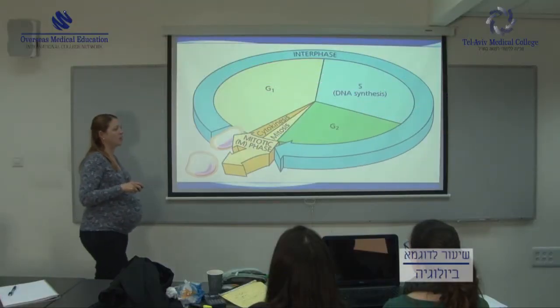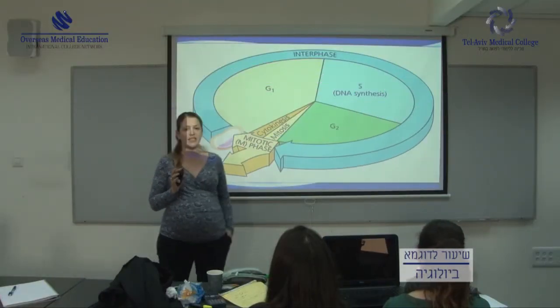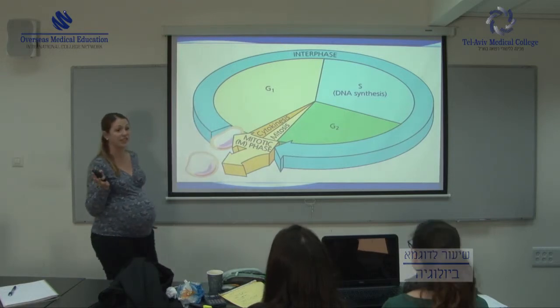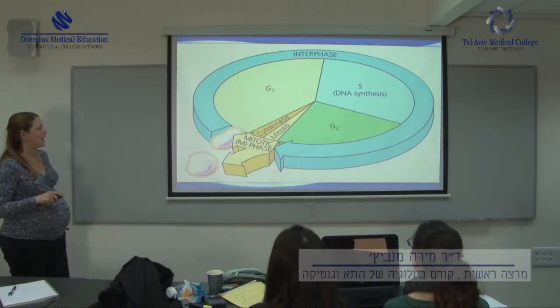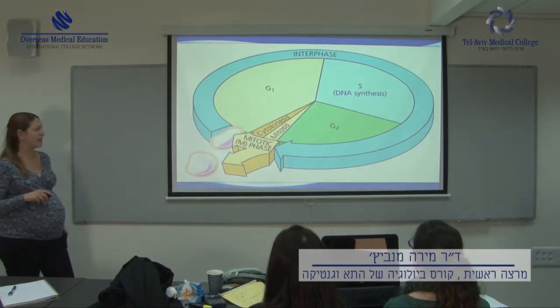First of all, we have one cell and it divides and then we get two daughter cells. And we basically start right here after the mitotic phase.